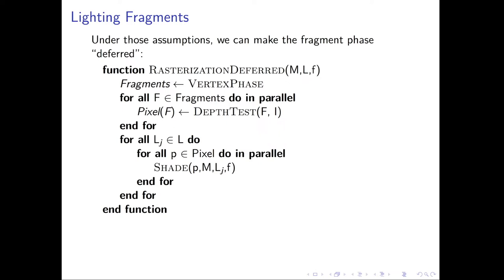That was the formulation of the algorithm rasterization deferred that we learned about. The motivation was that we usually have many more fragments than pixels, and therefore we shade a lot of fragments that will end up being invisible. People do this because it's the only way to support semi-transparent surfaces, but if you assume there are no semi-transparent surfaces in your scene, you can reformulate the algorithm. That way you're able to support many more lights than with the basic rasterization algorithm, allowing you to introduce a variable number of lights into the rendering pipeline.